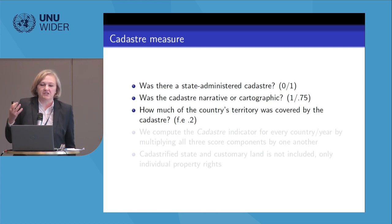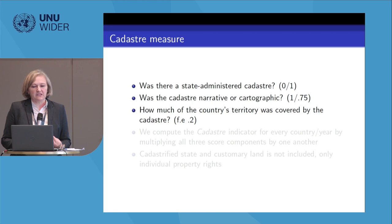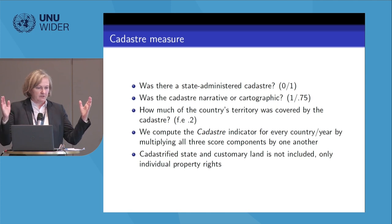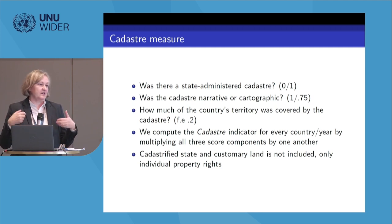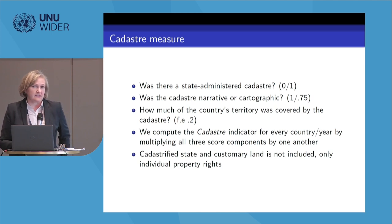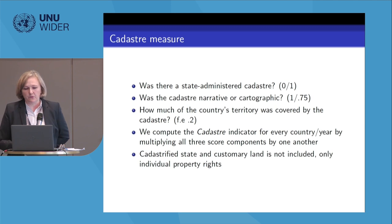We ask: Was there a state-administered cadastro? Was the cadastro narrative or cartographic? And how much of the country's territory was covered by the cadastro? For each sub-Saharan country and each year — our period is determined by data availability on the dependent variable — our original dataset runs over 1,000 years and 160 countries. We compute the cadastro indicator for each country-year by multiplying these three score components by one another.